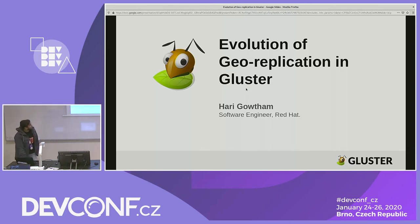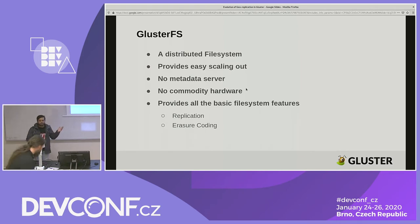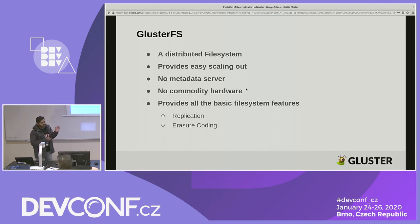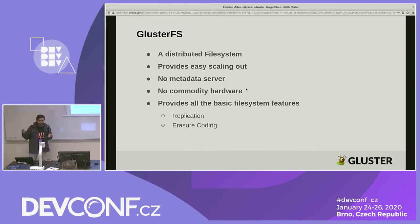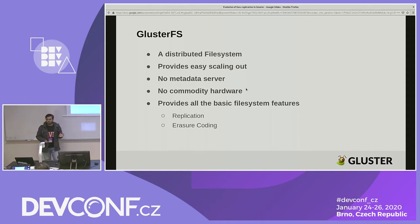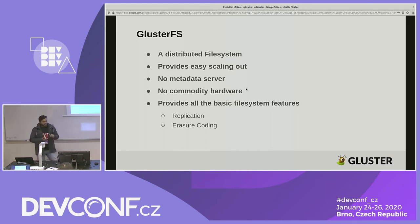Let me explain about Gluster so that you get an understanding of how things are actually going to work. Gluster is a distributed file system which provides easy scale-out when necessary. You can add as much storage as you want on the go without taking the cluster down. Gluster doesn't have a metadata server, so there is no bottleneck and no single point of failure. You can run it on pretty much any hardware — you don't have to buy a special box.